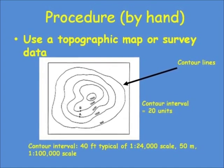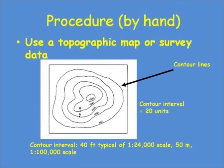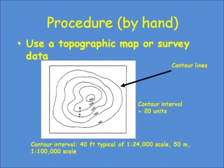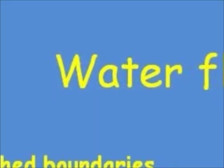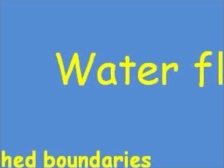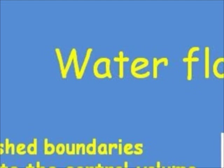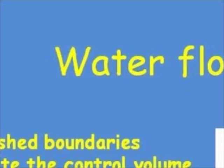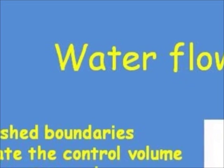When we delineate watersheds, we're interested in high points and low points. Watershed delineation is built on the principle that water flows downhill. Watershed boundaries delineate what's called a control volume of the system under consideration.